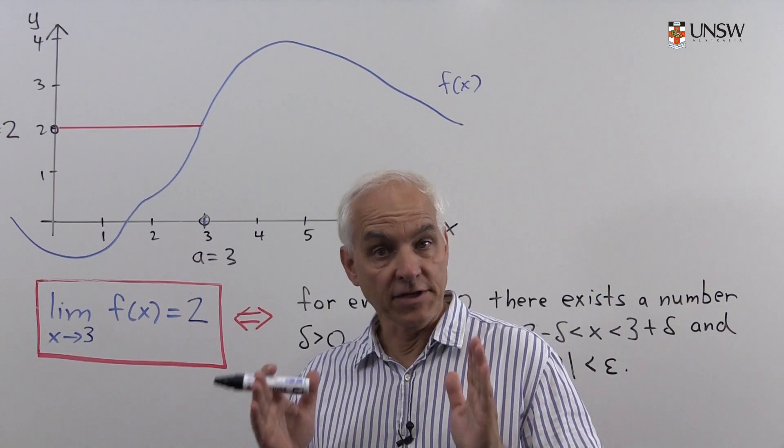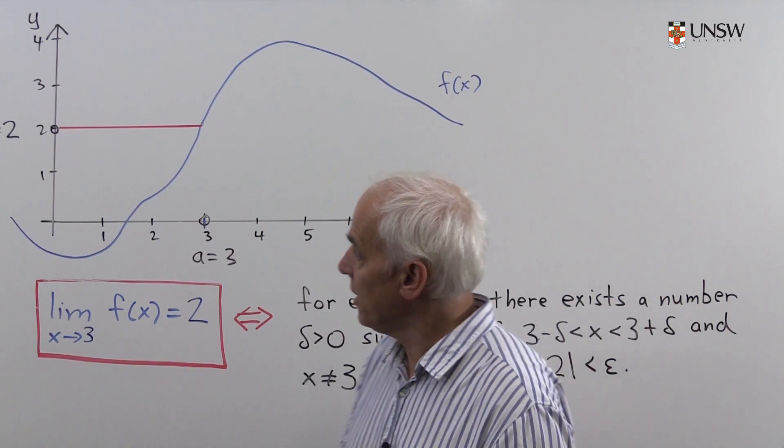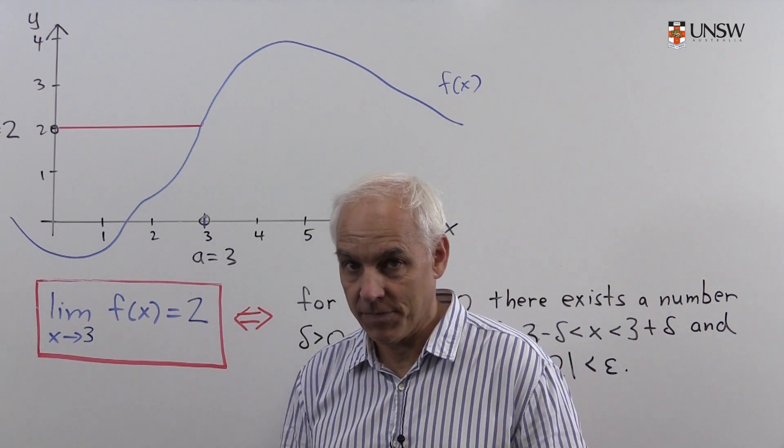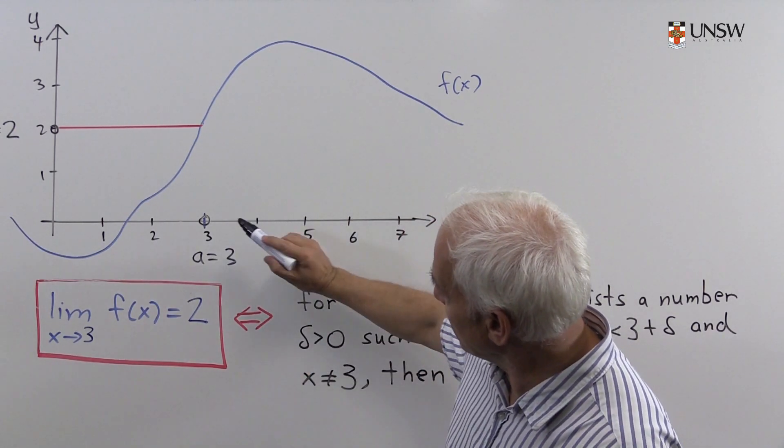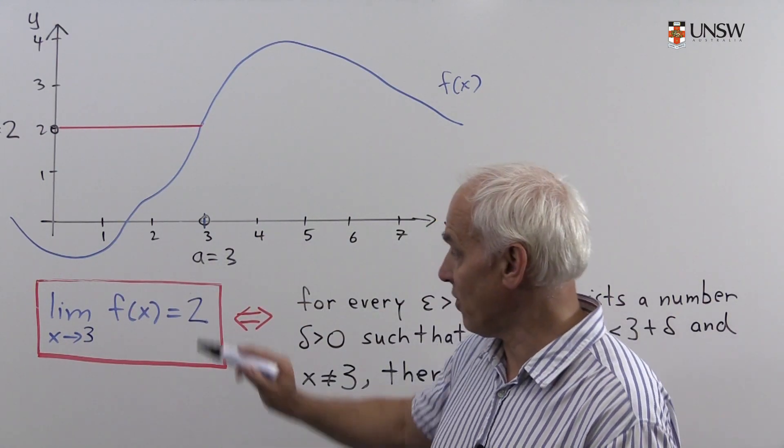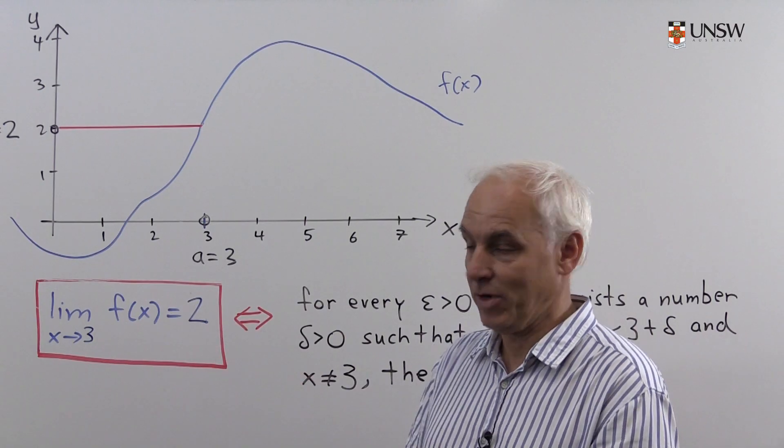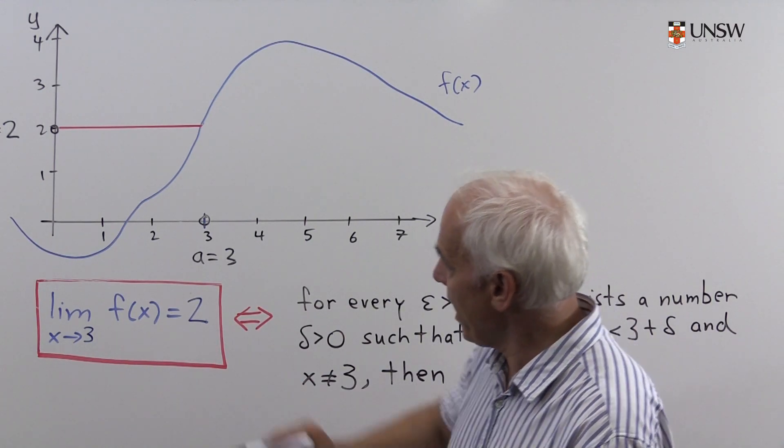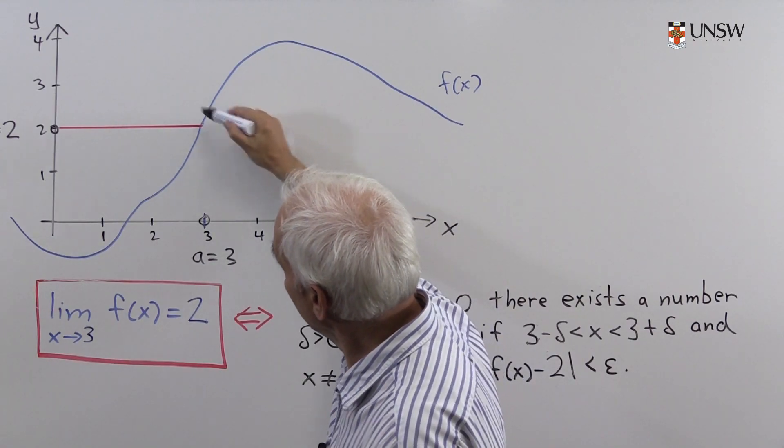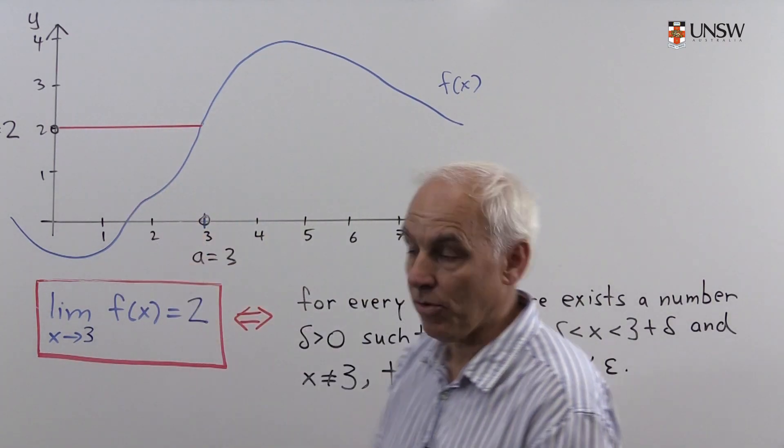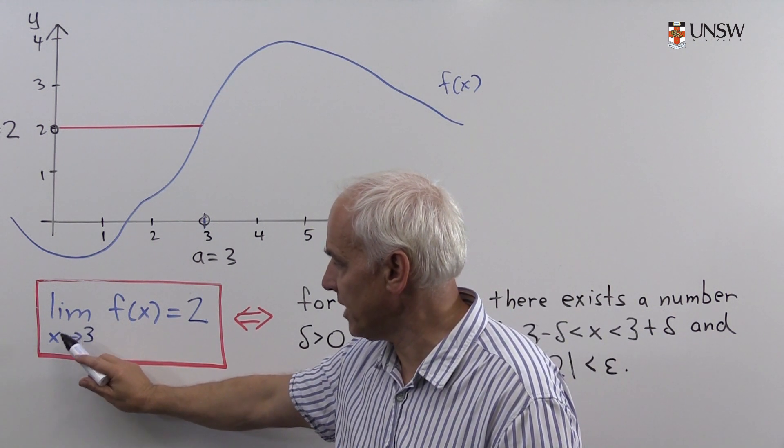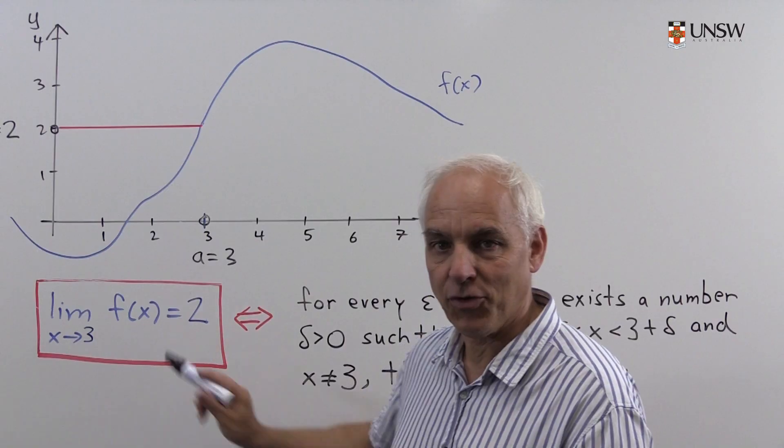Let's have a look at this definition in a special case. Here is a diagram of some unknown function f of x. And we happen to be interested in the function's behavior near the point x equals 3. So that's our value of A in this situation. What happens to f of x as x approaches 3? Well, it looks like the function's values are approaching 2. So we think this statement is true, that the limit as x approaches 3 of f of x equals 2.